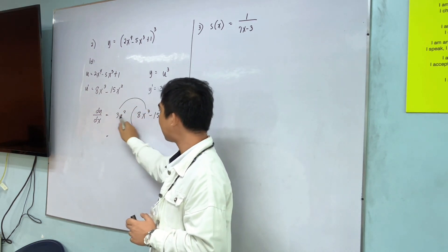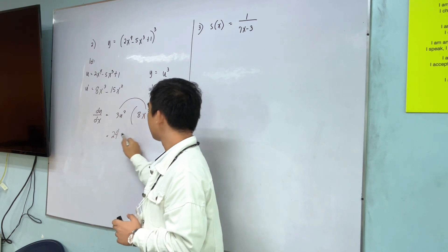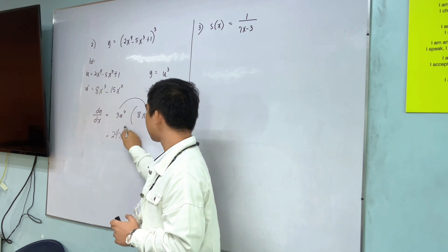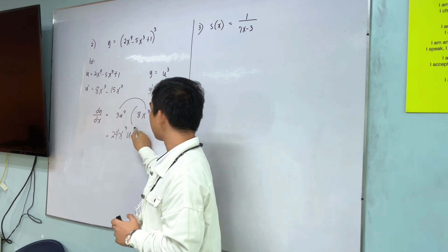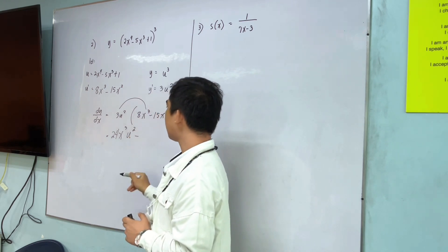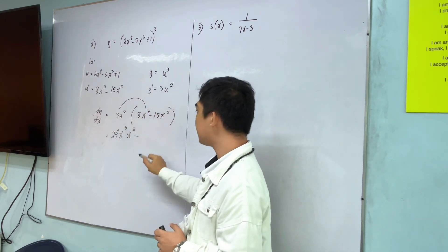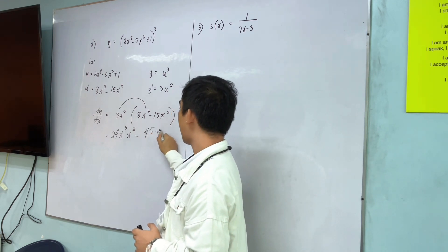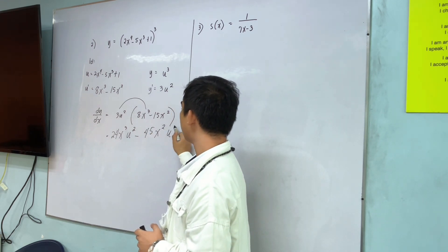3 times 8? 24. x cubed u squared. Minus. 3 times 15? 45. x squared u squared.